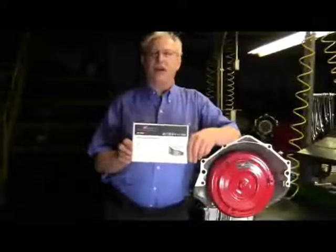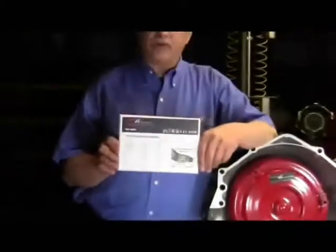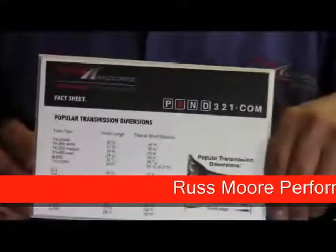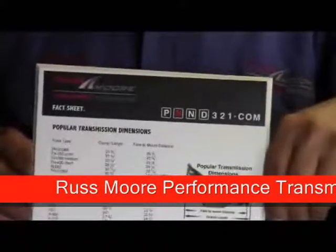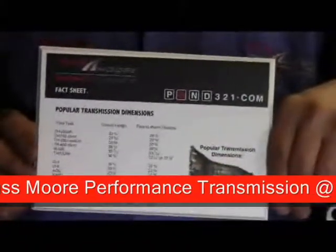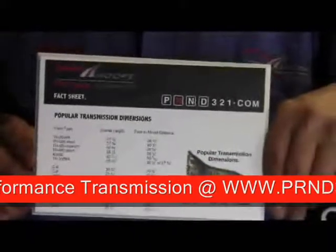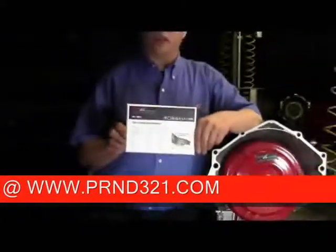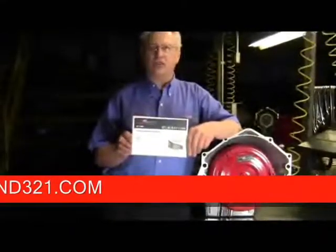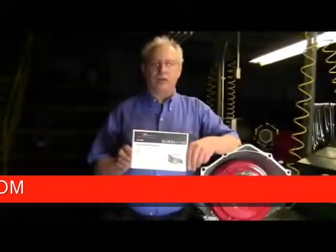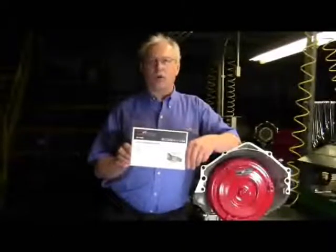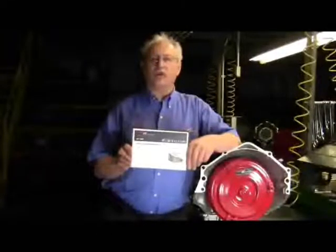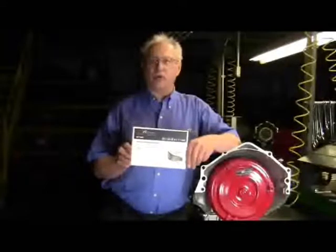When you're trying to decide on which transmission to use, on our website you will find this little fact sheet of transmissions and the overall length they are and where the transmission mount is to go. This will be a big help in determining which transmission you're going to use. Just because it's a GM transmission, the mounts are not in the same spot on all of them. Just because it's a Ford, the same thing applies. So take a look at this little fact sheet on our website and it will help you determine what kind of transmission to use.